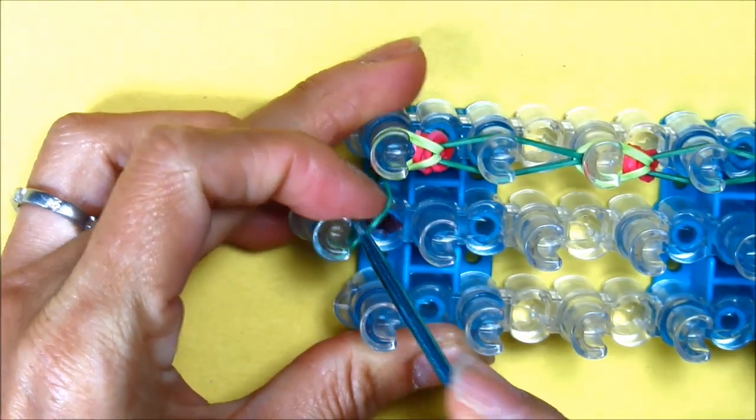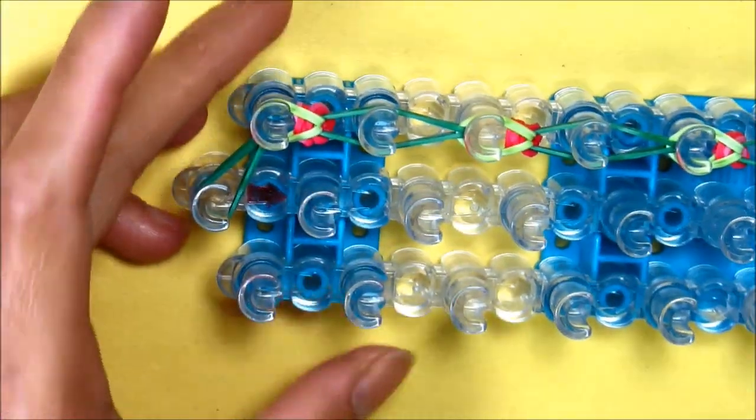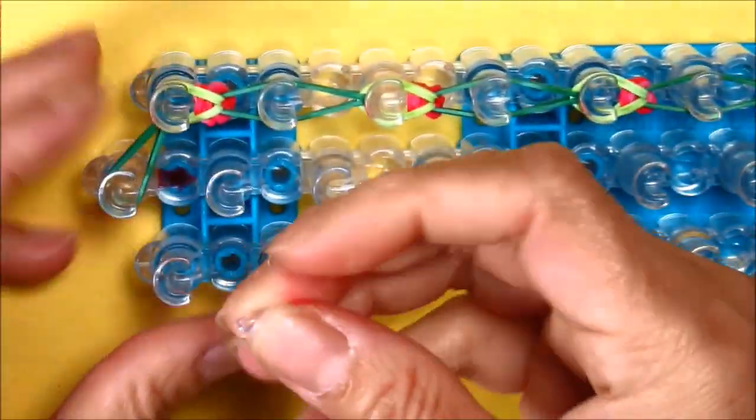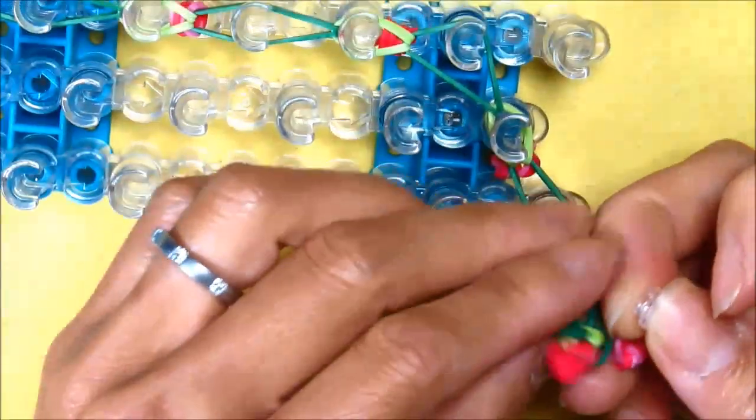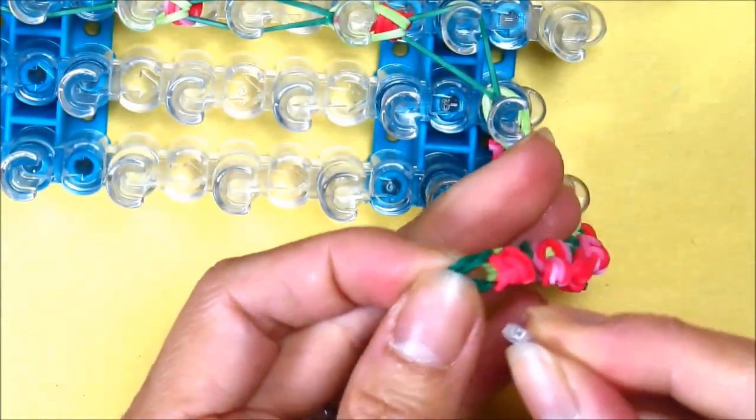Lastly, your bracelet ends there. You're going to need a C-clip. We'll attach it on the end of our bracelet.